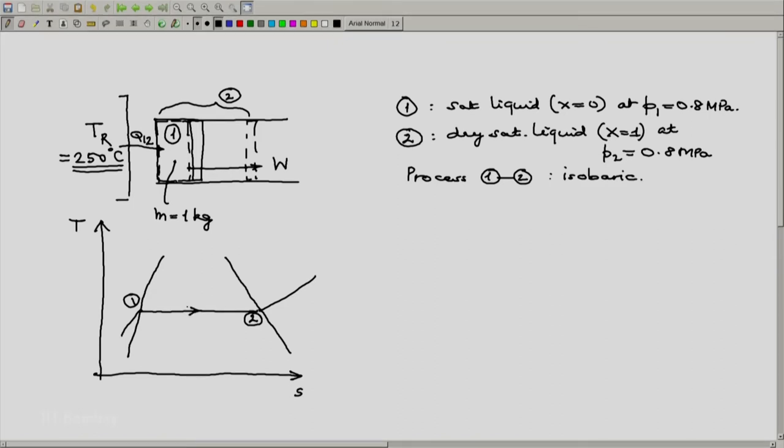So what is the assumption that we make? It is already given that it is a closed system. Let's proceed. We apply first law. First law is Q equals delta E plus W. So Q12 will be delta E12 plus W12.